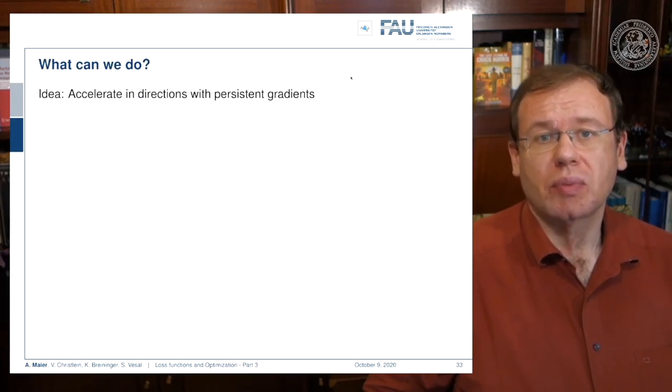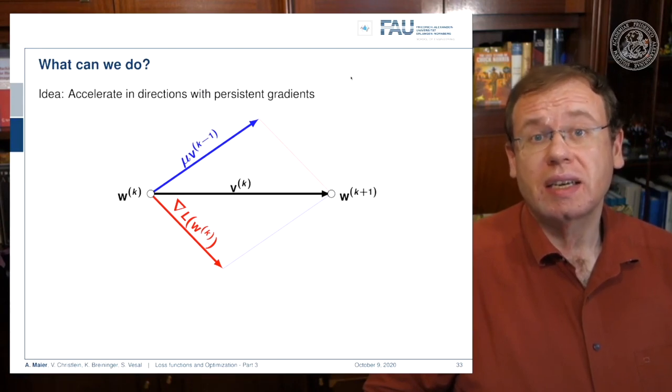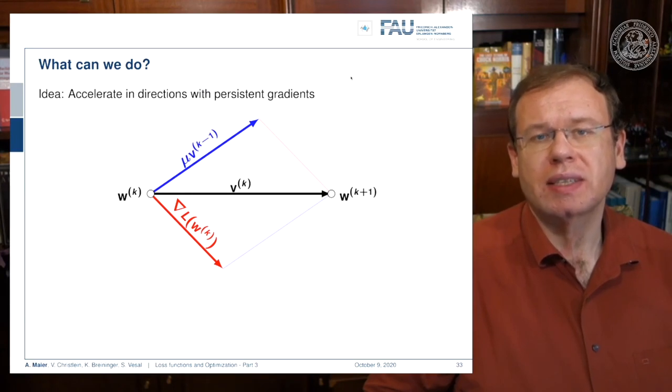What else can we do? Well, we could accelerate the directions of persistent gradients. The idea here would be that you somehow keep track of the average that is indicated here with v. This is essentially a weighted sum over the last couple of gradient steps. You take the current gradient direction indicated in red and average it with the previous steps.